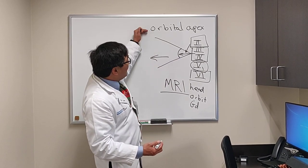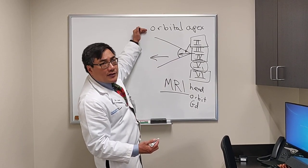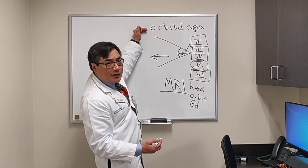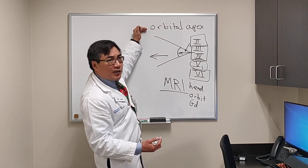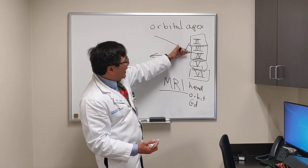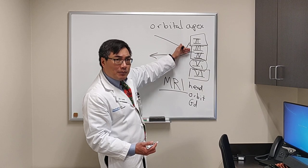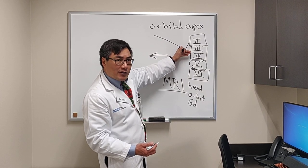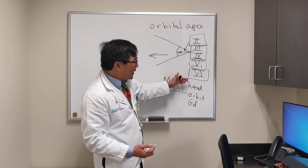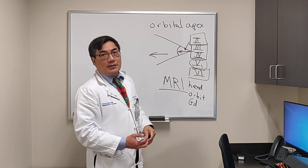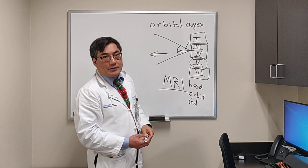In summary, if you have the combination of afferent — optic nerve afferent or sensory afferent trigeminal — and efferent ophthalmoplegia involving nerves three, four, and six, we should be thinking about the orbital apex.